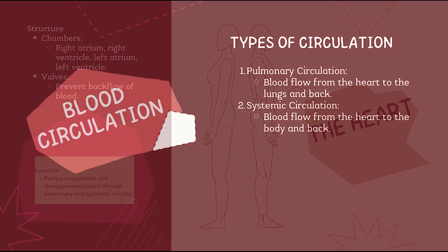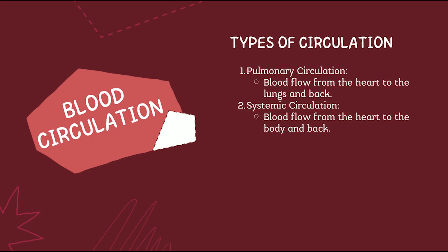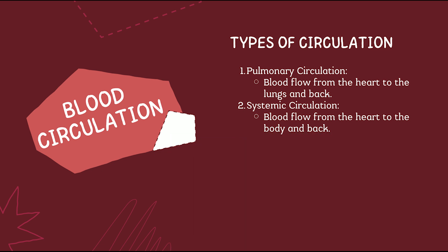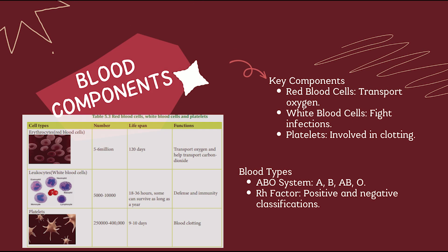There are two main circulation types: pulmonary circulation and systemic circulation. Pulmonary circulation goes from the heart to the lungs and back to the heart. Systemic circulation goes from the heart to the body and back to the heart. This double circulation ensures oxygen-rich and oxygen-poor blood stays separate and efficient.